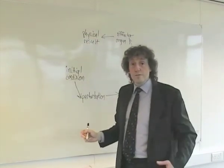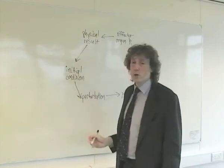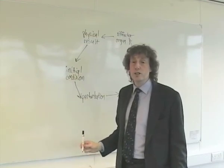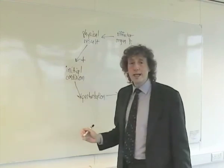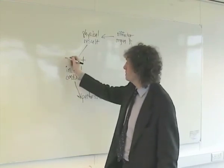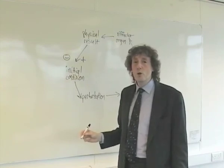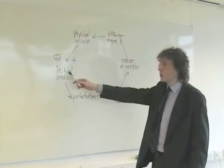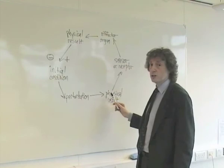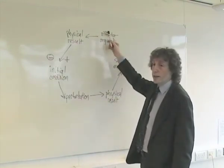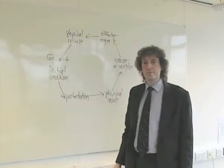This final physical result should relate back to the initial condition or parameter being measured. To score full marks on the examination, you must draw an arrow from the final physical result back to the initial condition, accompanied by either a plus sign for a positive feedback loop or a minus sign for a negative feedback loop. The positive sign demonstrates that the feedback leads to a more extreme initial condition, whereas the negative feedback loop shows compensation. To recap: initial condition, perturbation, physical result, sensor or receptor, effector organ, physical result back to the initial condition.